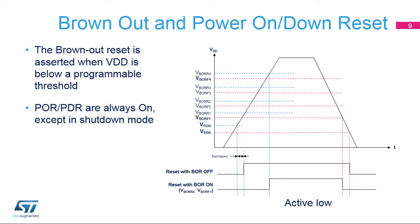Five BOR levels can be selected through option bytes. During power on, the BOR keeps the device under reset until the supply voltage VDD reaches the specified VBOR X threshold. When VDD drops below the selected threshold, a device reset is generated. When VDD is above the VBOR X upper limit, the device reset is released and the system can start.